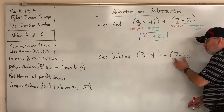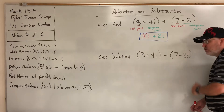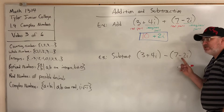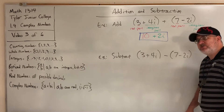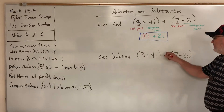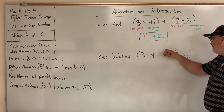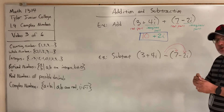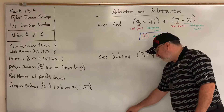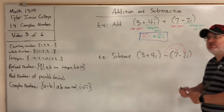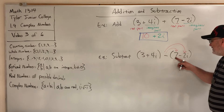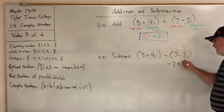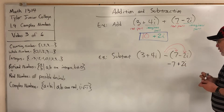When you see a subtraction in front of parentheses containing multiple terms, the subtraction gets distributed to each term — it's like multiplying by negative one. So every term changes its sign: the positive 7 becomes negative 7, and the negative 2i becomes positive 2i.